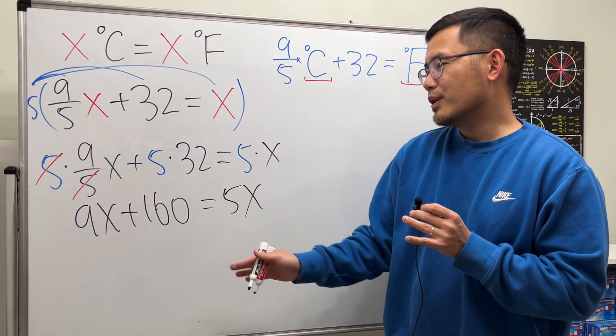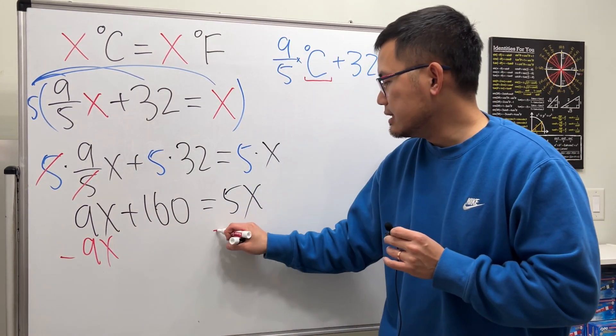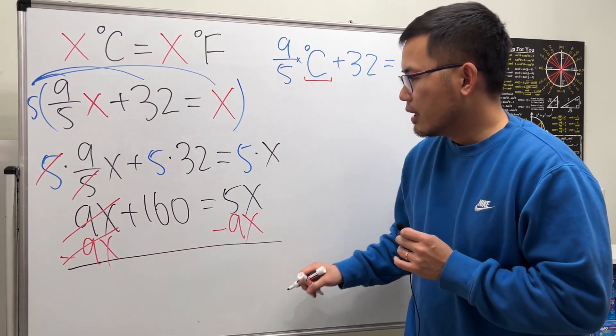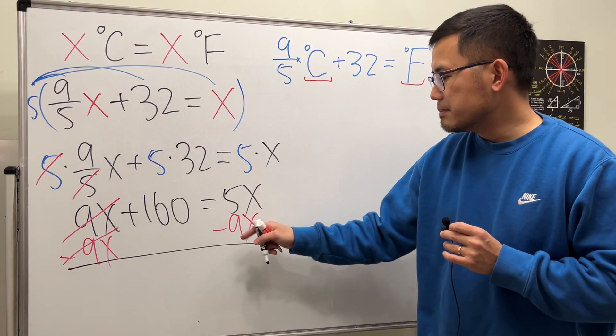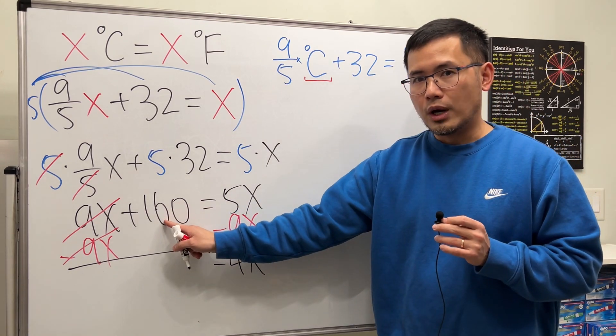Okay, no more fractions. Go ahead, put all the x's on one side. So let me just subtract 9x on both sides. So this term and that term cancel. And let me just write down the x terms right here first. 5x minus 9x is negative 4x. That will be equal to 160.